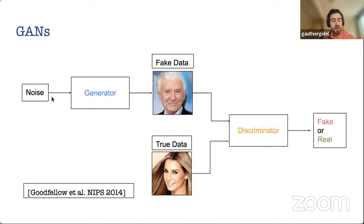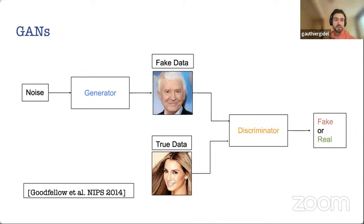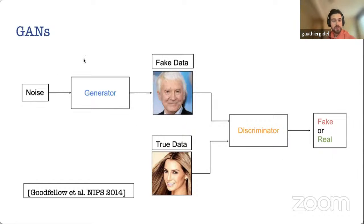The generator is trained through an adversarial formulation: we put a discriminator against it. The discriminator is a binary classifier that tries to distinguish the true data distribution from the fake generated data — a binary classification task. The game is set up so the generator tries to mimic the true data distribution.